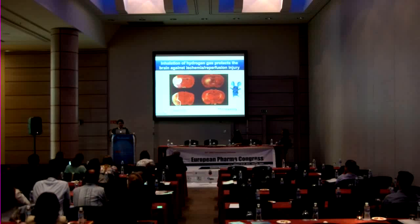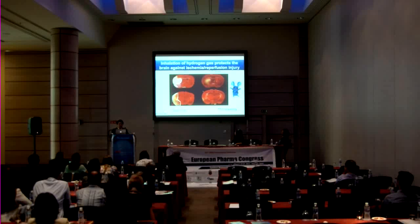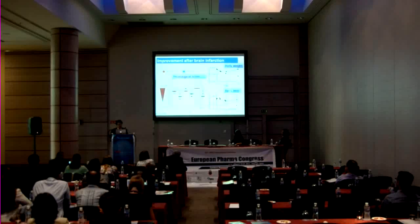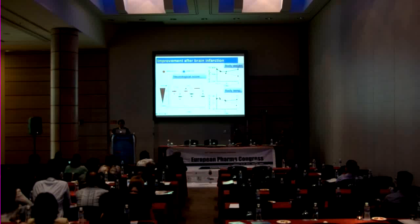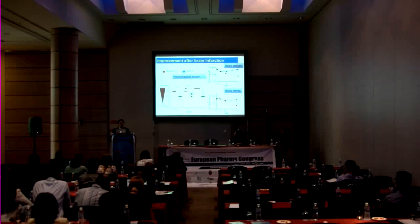This staining shows living cells, so this region indicates dead cells, and we can see a clear difference after one day. Hydrogen also improves neurological scores, body temperature, and body weight. Based on these results, double-blind clinical studies on brain infarction are currently under investigation, with a patient scale of about 50 patients.